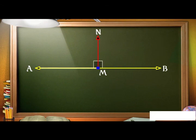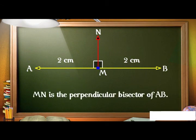Yes, as AM equals to MB equal to 2 cm. This implies MN bisects AB, that is, divides AB into two equal parts and is also perpendicular to AB. So we say MN is the perpendicular bisector of AB.